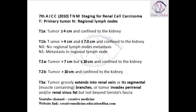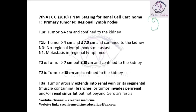According to TNM classification of renal cell carcinoma, if there is a tumor in the kidney and it is less than 4 cm, then it is T1A. If the tumor is confined to the kidney with a size between 4 to 7 cm, then it is T1B.